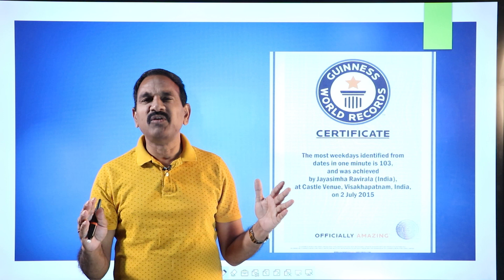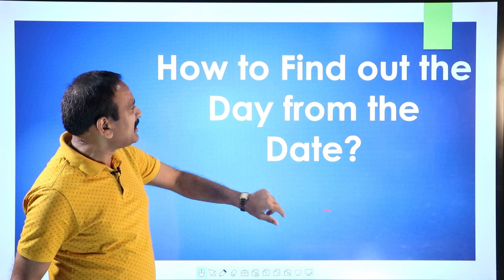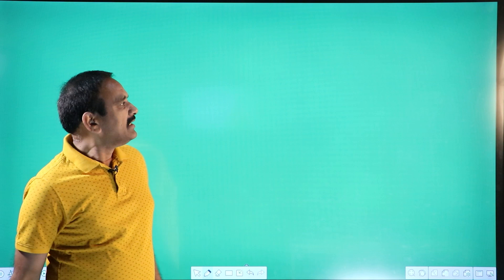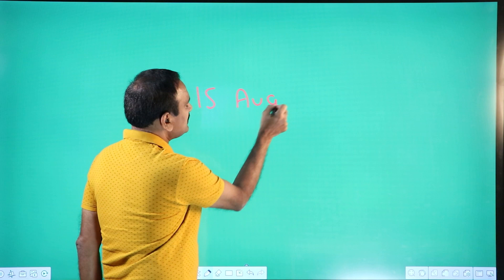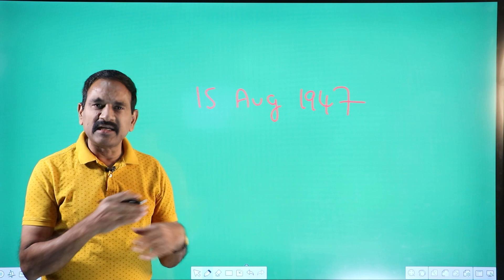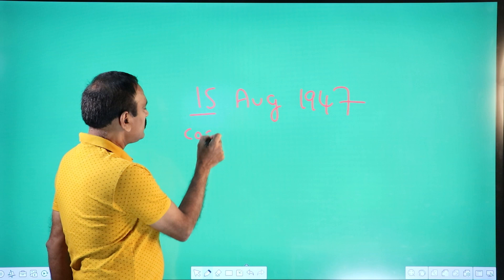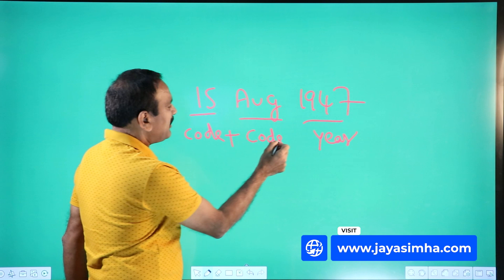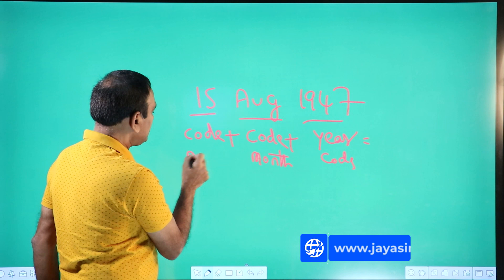I have developed one such logic — how to find out the day from the date. I found one nice beautiful formula. For example, for 15th August 1947, this date has a date code, the month has a month code, and the year has a year code. I developed these codes. So the formula is: date code plus month code plus year code. Add them together and you get one total.